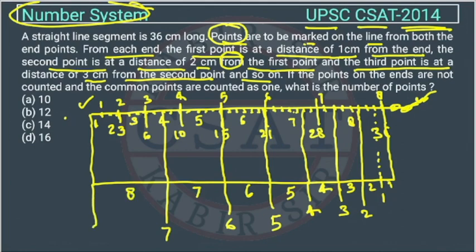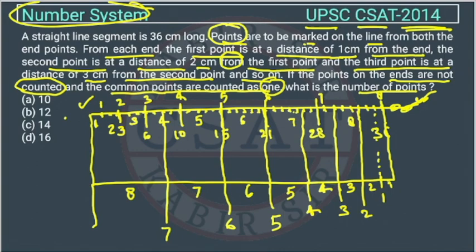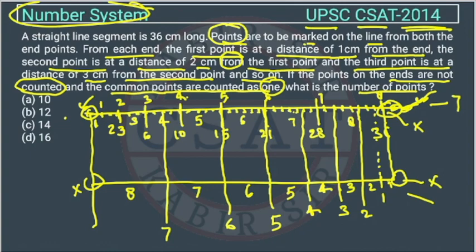Now, if the points on the ends are not counted, and common points are counted as one — the endpoints are excluded. Counting from the left side: 1, 2, 3, 4, 5, 6, 7 — that is 7 points. Similarly from the right side, excluding the endpoints: 7 points as well. So total so far is 7 plus 7 = 14.